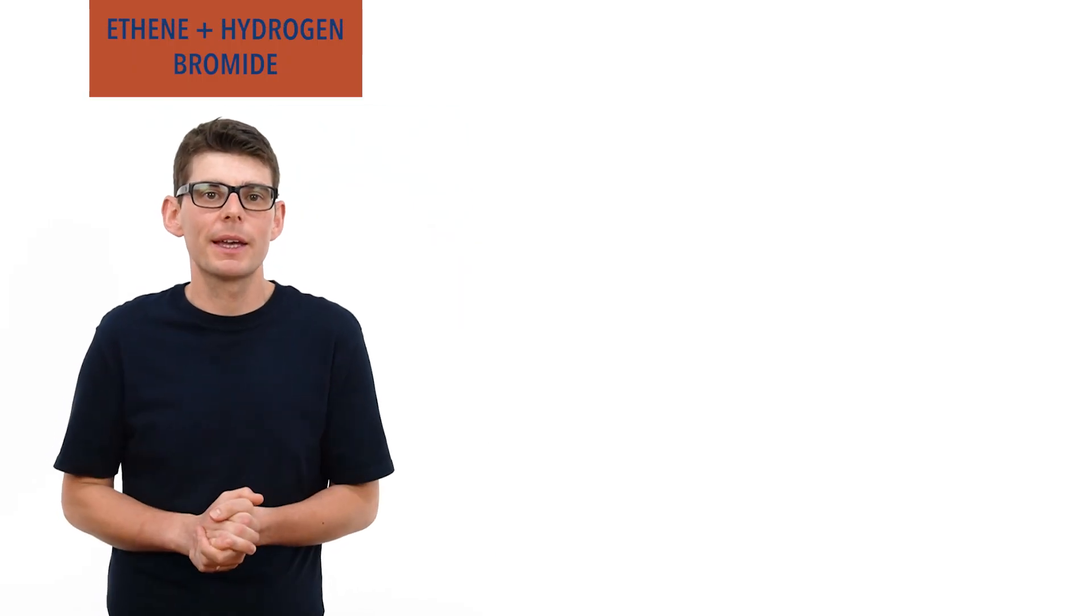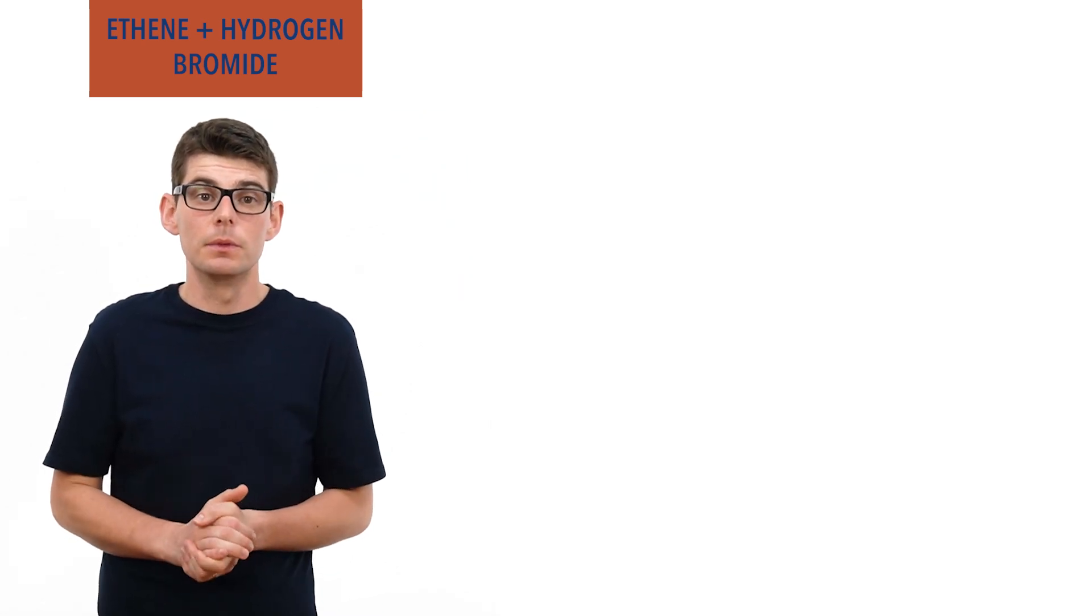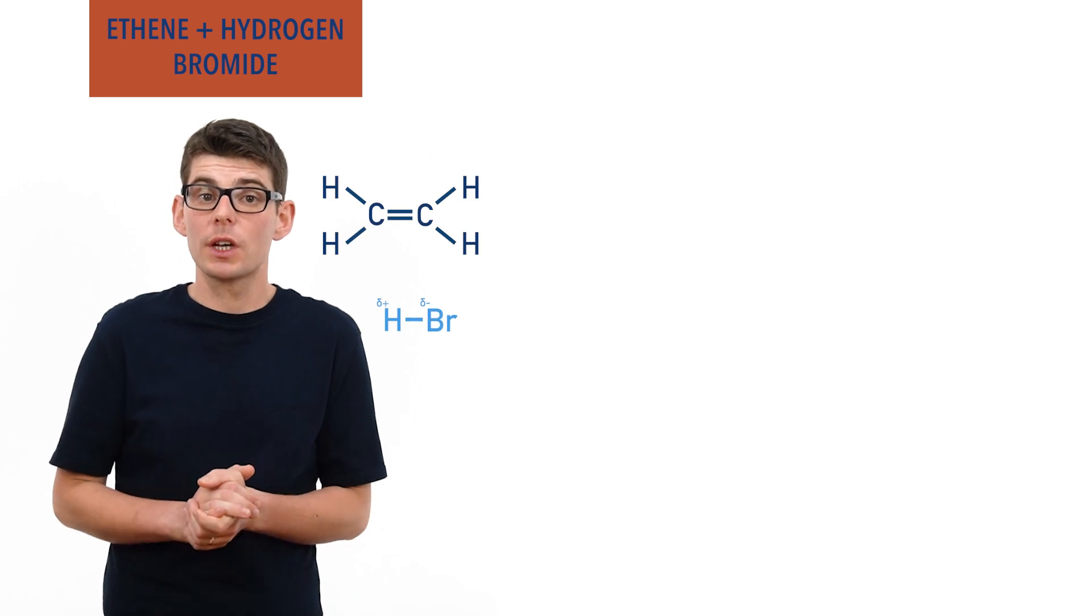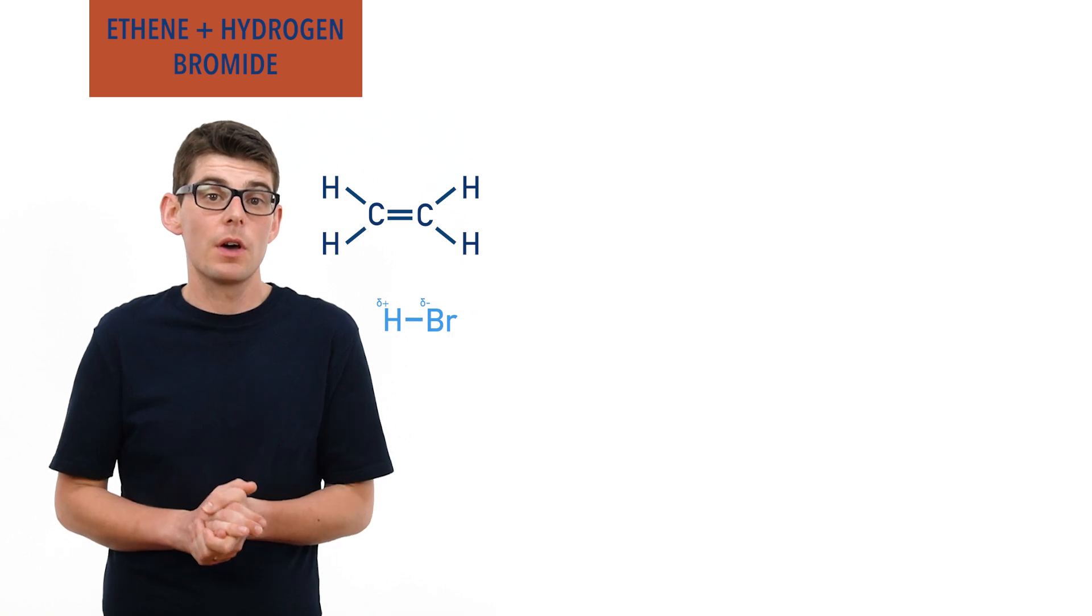Let's have a quick recap of this mechanism using ethene and hydrogen bromide as an example. A polar hydrogen bromide molecule gets close to the carbon-carbon double bond in ethene and the partially positive hydrogen atom